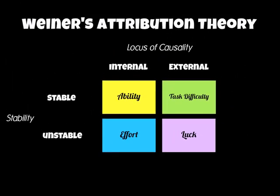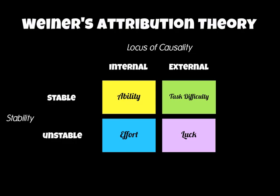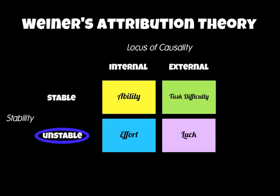Weiner's attribution theory suggests that effort is the one thing we can change to alter someone's attribution. The reason is that it relates to internal factors — so it's under our control — and it comes under the unstable stability category, meaning it can be changed more easily. Effectively, if we can change effort, we can change the way somebody thinks and have a positive impact on their attitude towards sport.